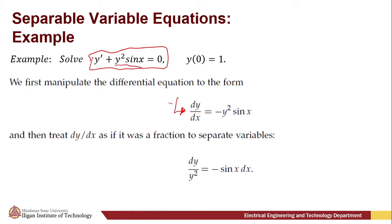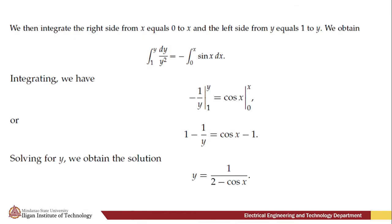We just transpose that term to the right-hand side of the equation, and then treat dy/dx as a fraction to separate the variables. After transforming to standard form, we separate the variables: dy/y² equals −sin x dx. After separating, we integrate the left side from y = 1 to y and the right side from x = 0 to x, since we are given the initial condition y(0) = 1.